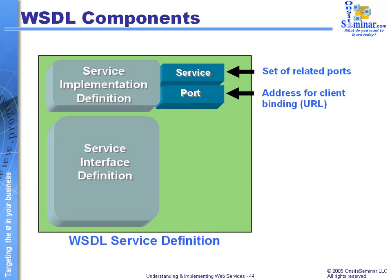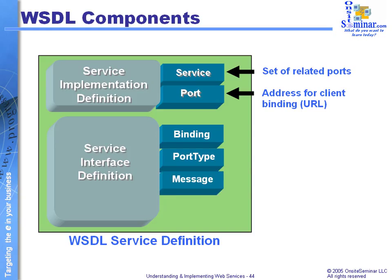Once we've identified the service, the next portion of the WSDL document is called the service interface definition. Now that we've gotten to the web service, what kinds of things are we going to be able to do, and what kind of data are we going to be working with? The sub-categories here include a binding component, a port type, a message piece, and the type information itself.